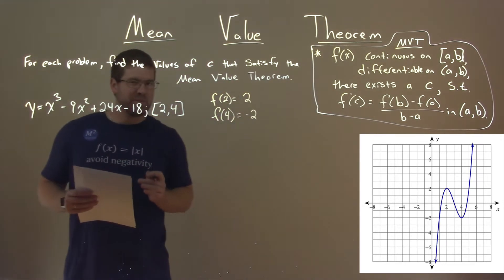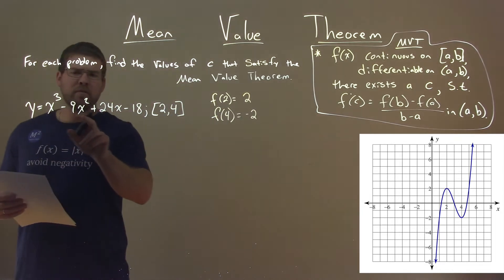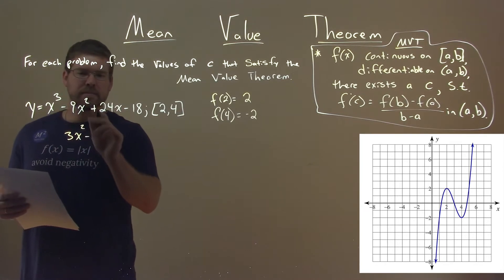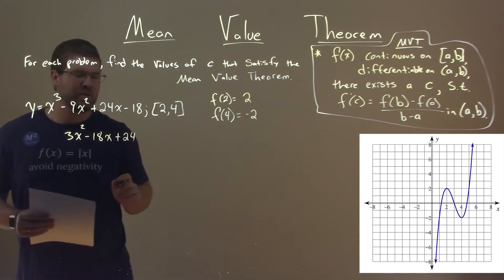Now that we have those values, we can apply our Mean Value Theorem. We take the derivative of our function, 3x squared minus 9 times 2 is 18x, plus a 24, and there's our derivative.